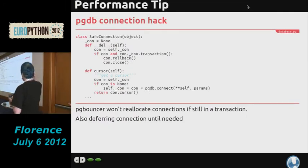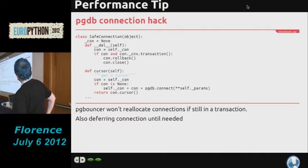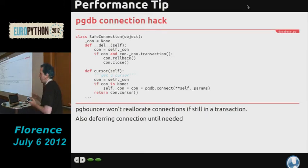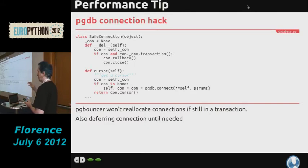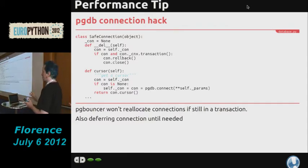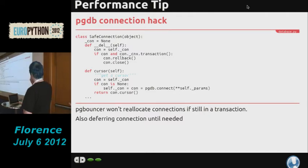A couple of useful hacks for pgbouncer. We don't create a real connection in our web services; we create what we call a 'safe connection'. If you have a database connection open and exit from your function leaving it in a transaction, pgbouncer cannot reallocate that connection — it's effectively lost in the pool. It will be garbage collected later, but in the meantime pgbouncer has to create another real connection. So you lose all the benefit of pgbouncer if you don't make sure your database connections close cleanly.